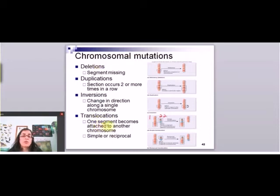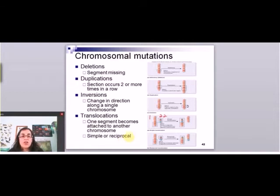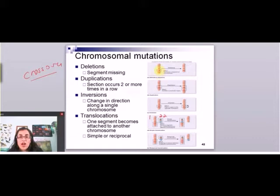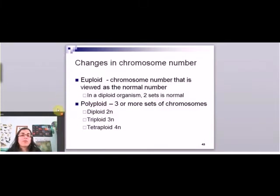There are cancers associated with translocations, cancers associated with duplications and deletions, and other abnormalities. These are not something the body is just going to be okay with — they tend to cause disease. These are usually a result of problems in crossover, so when the cell is trying to exchange pieces, some mistake happens — that's where a lot of these come from.